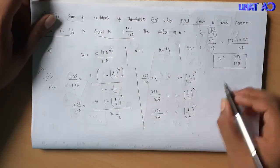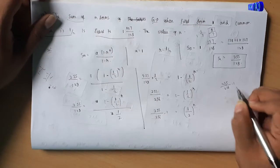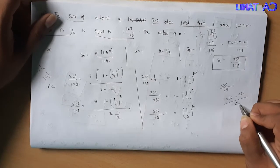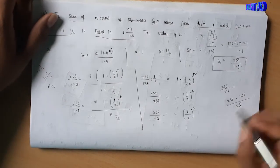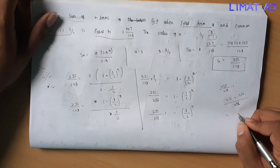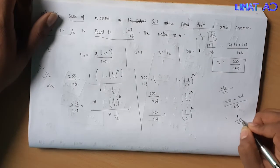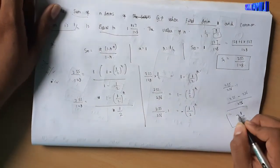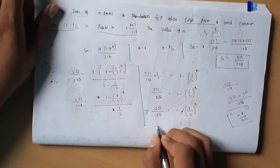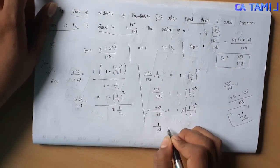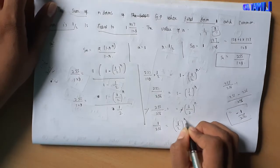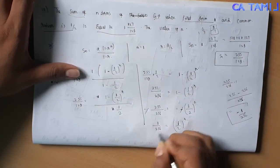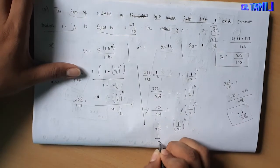Next step is to solve: 255 divided by 256 minus 1, which gives us 255 minus 256 divided by 256, equal to negative 1 divided by 256. So 1 divided by 256 equals 1 divided by 2 to the power n.